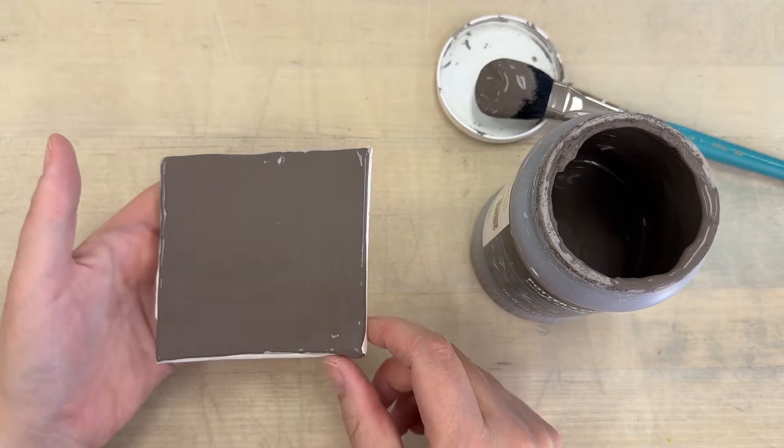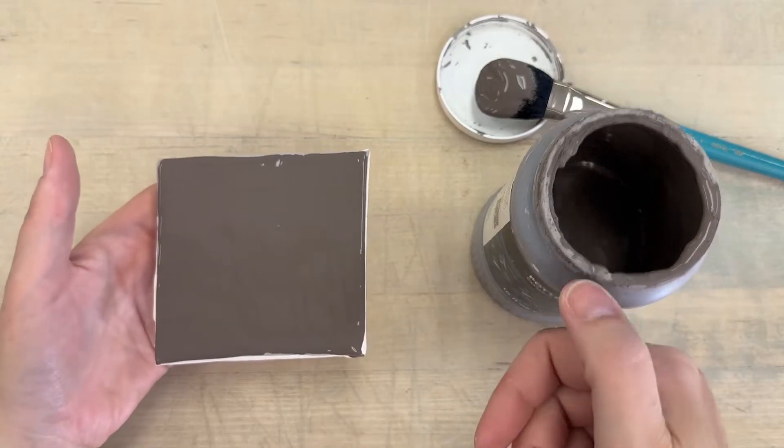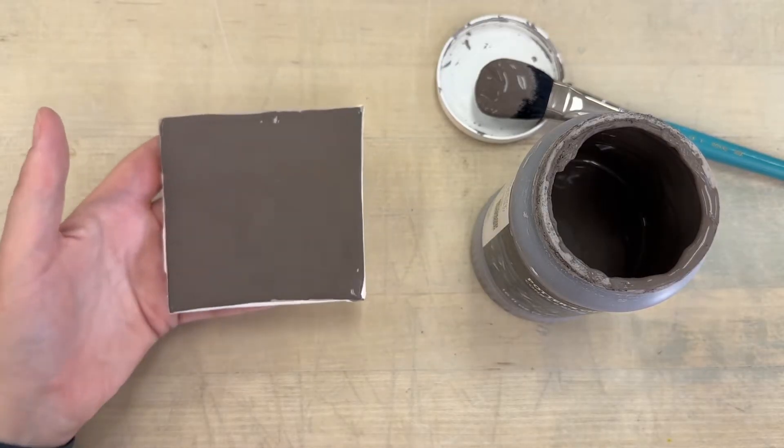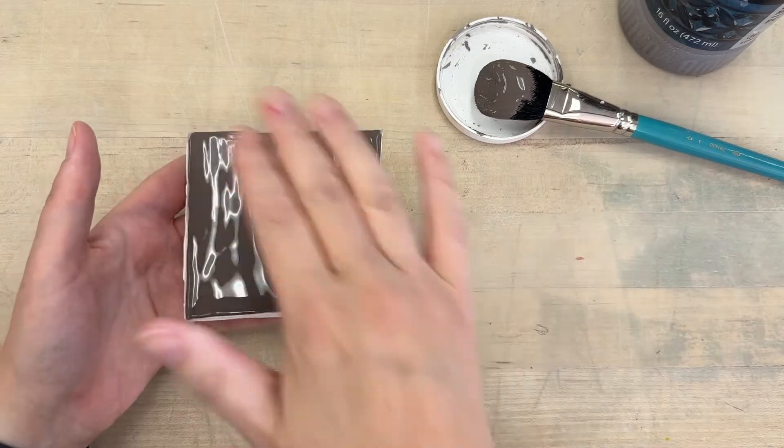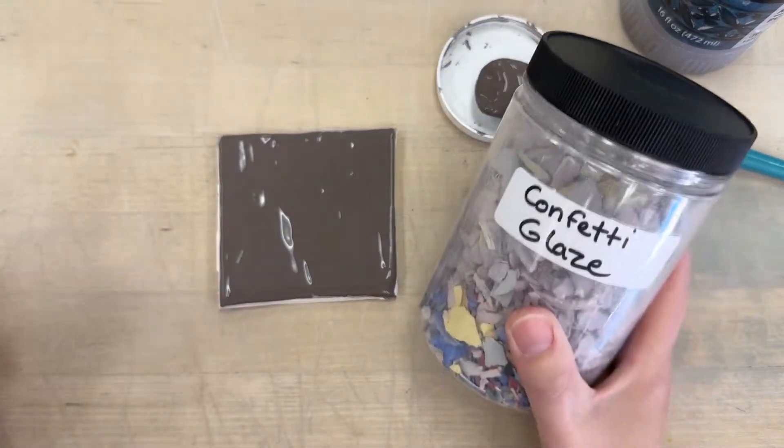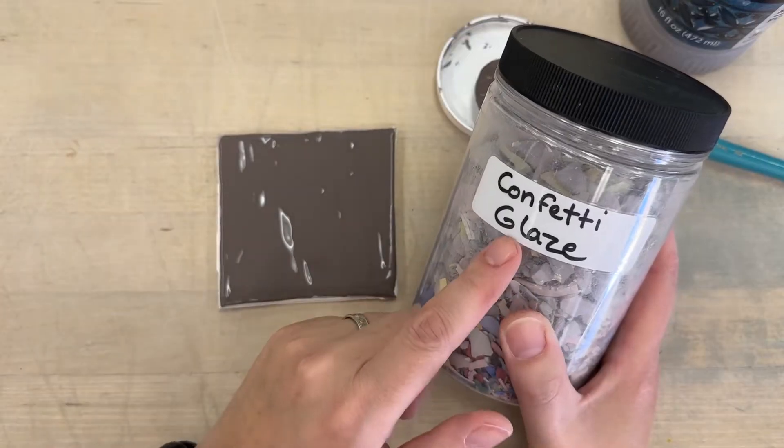I had already stuck a couple of layers on, but to get the confetti glaze to stick easily for moving around the classroom and stuff, it's nice if you have a freshly painted thing so it's still kind of wet and sticky and it can dry together.